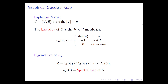This combinatorial notion has a spectral counterpart that captures its main spirit. Consider the Laplacian of the graph—a V×V matrix with the degrees on the diagonal and minus one at position (u,v) if {u,v} is an edge. This is a positive semi-definite matrix, and it is positive definite if and only if the graph is connected.